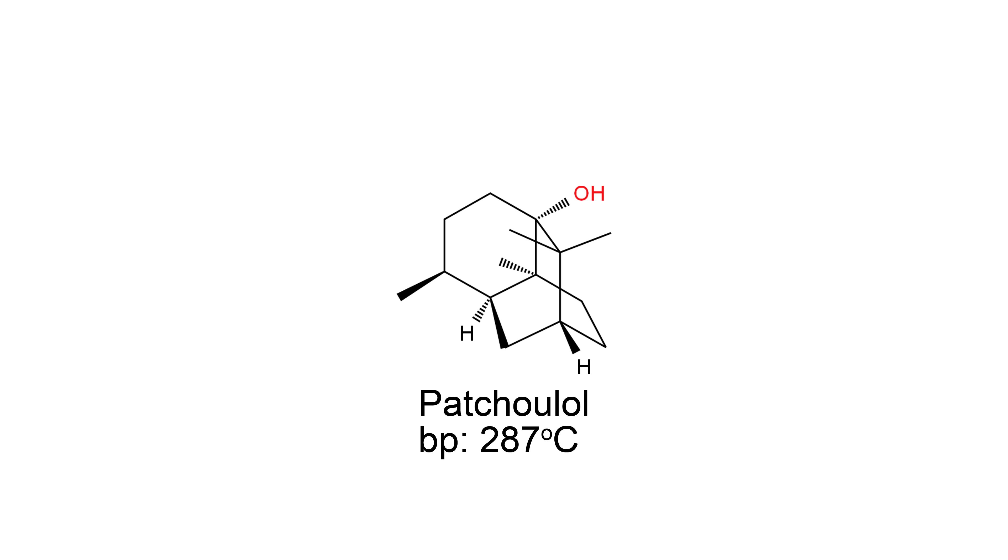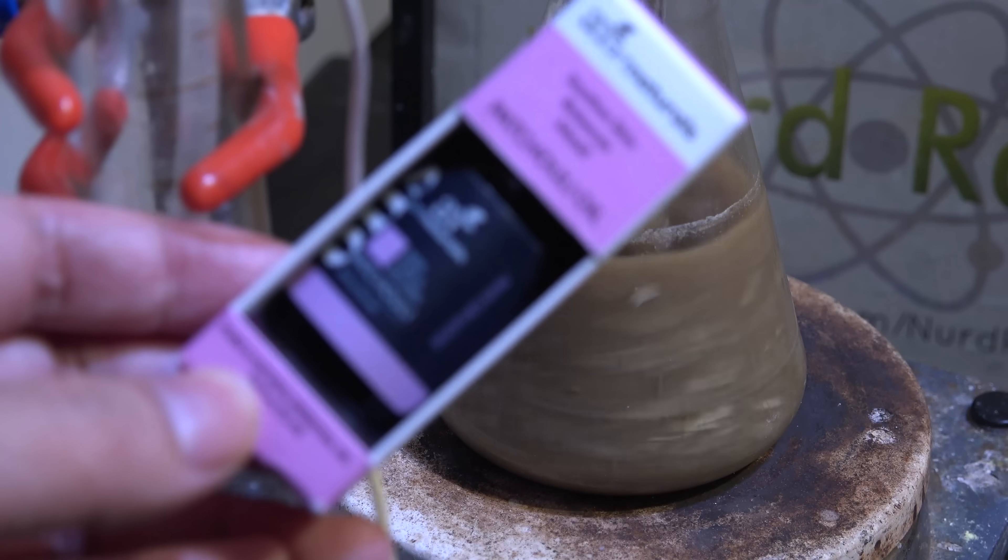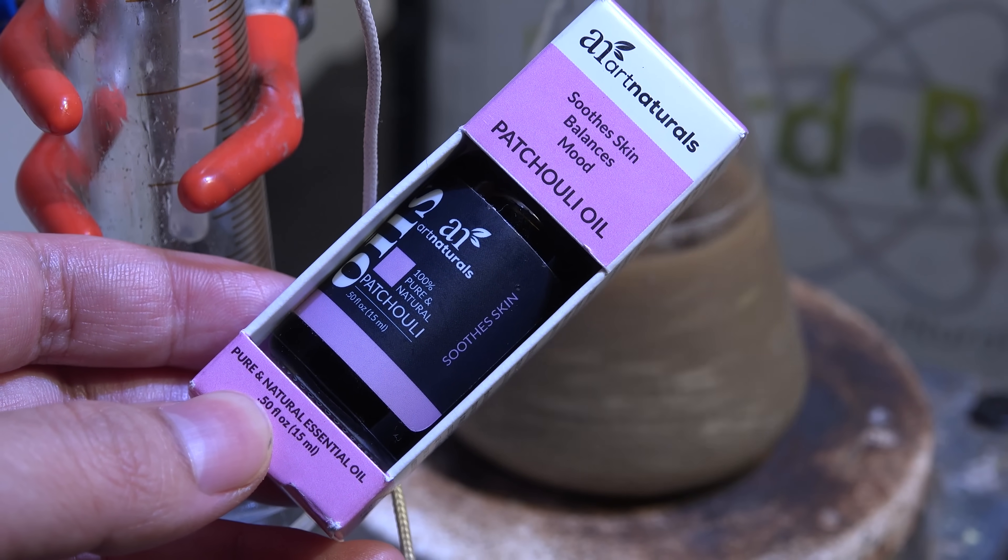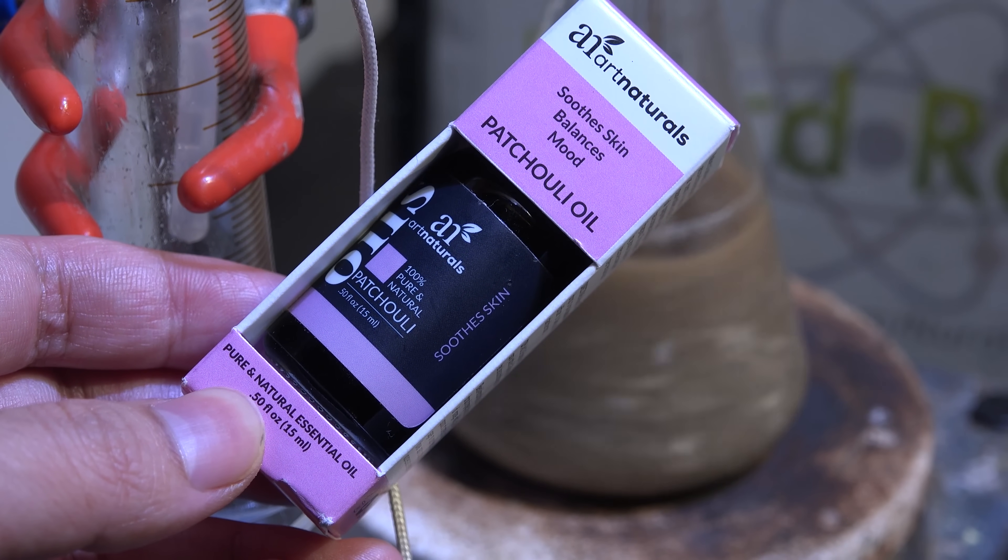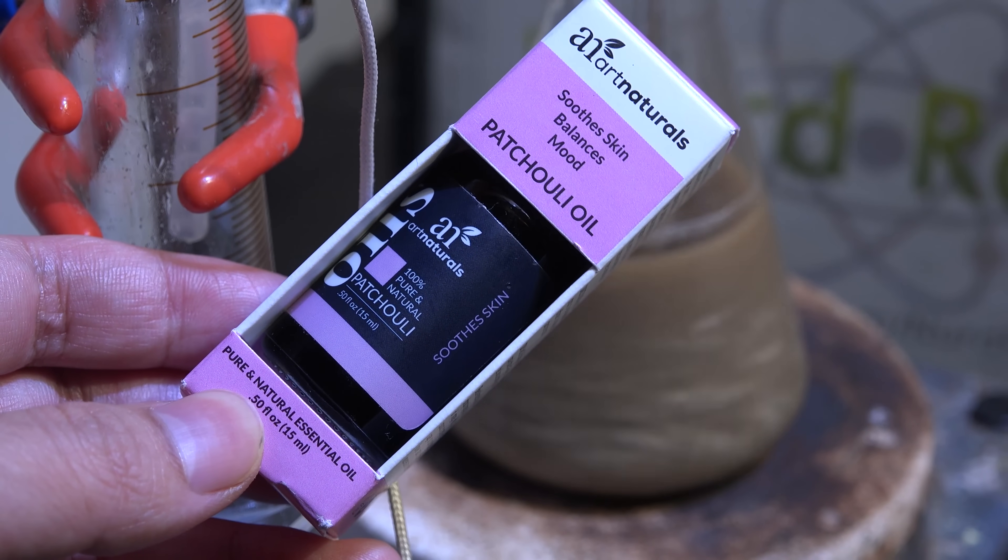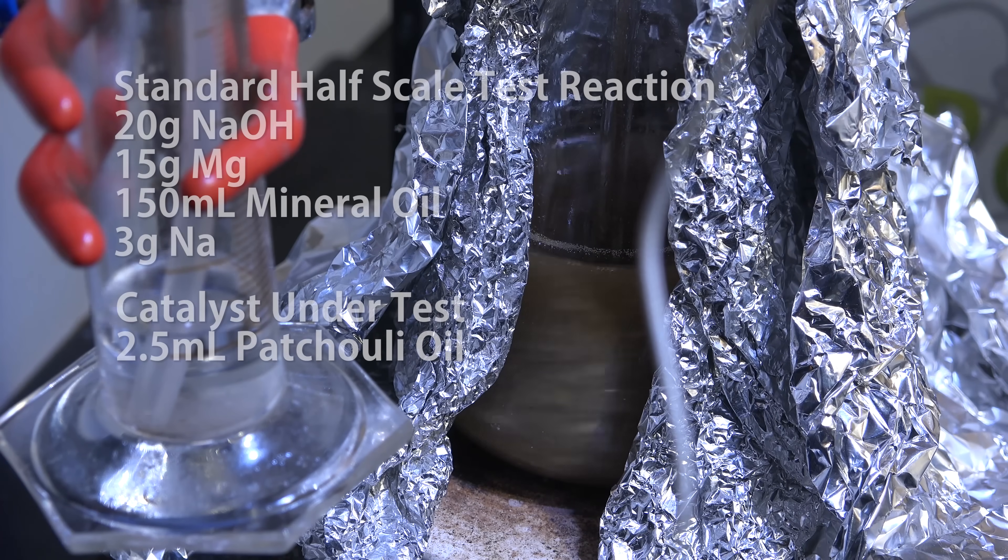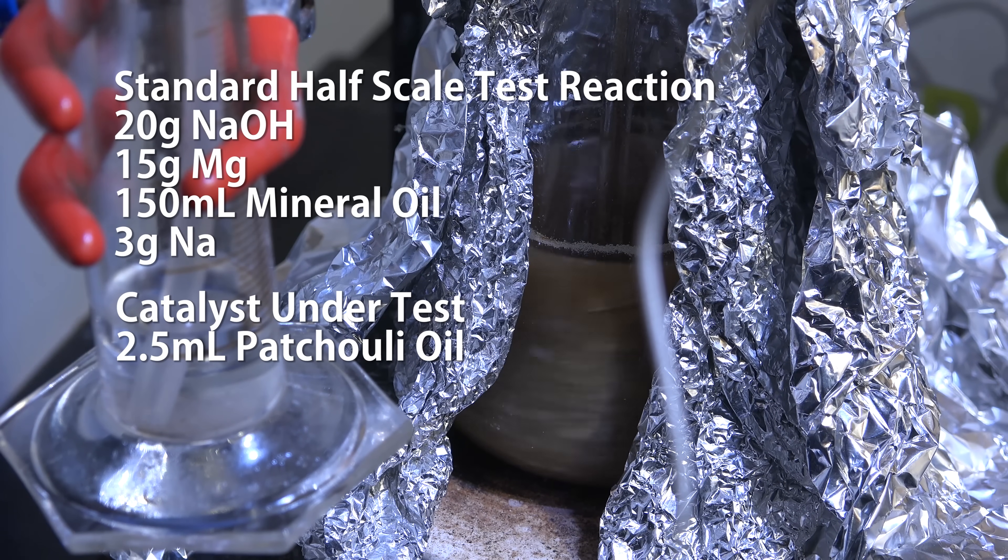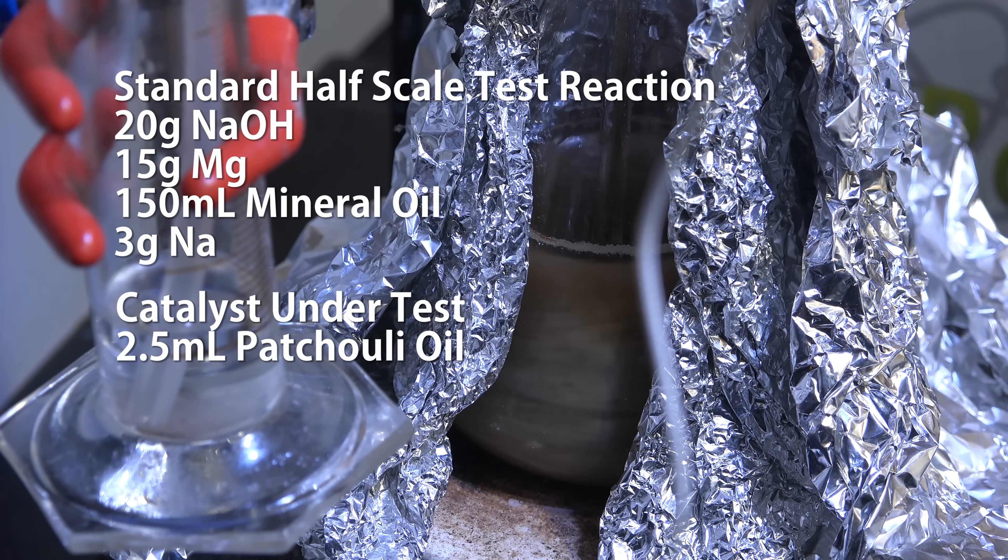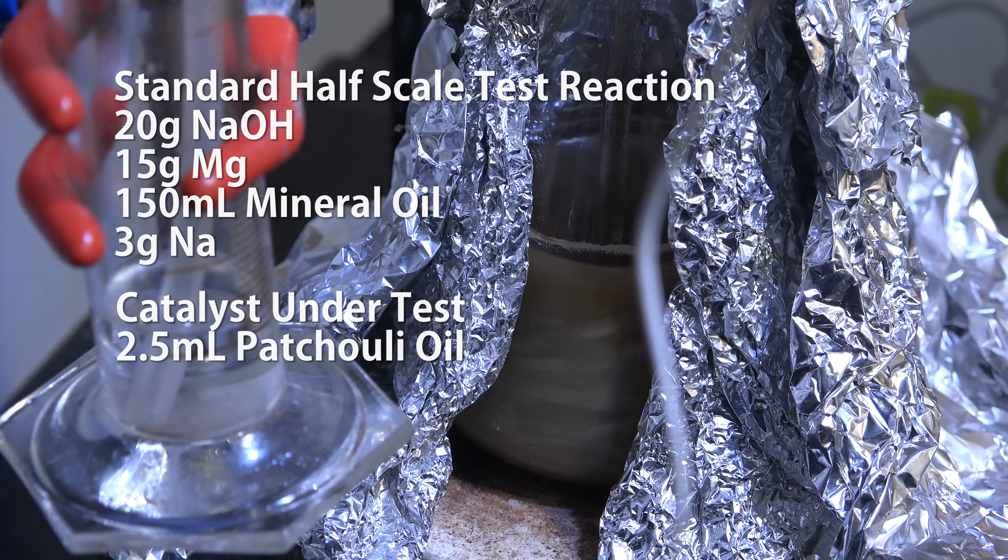Unfortunately it has a very high boiling point of 287 degrees celsius. So I can't simply just distill it off as that's beyond my ability to fractionate. So I'm just going to try it straight from the bottle to see if it works. Maybe we'll get lucky and the impurities don't interfere. So I set up another half scale sodium production reaction with 20g sodium hydroxide, 15g magnesium, 150ml of mineral oil, 3g sodium metal jumpstart and 2.5ml of our patchouli oil.